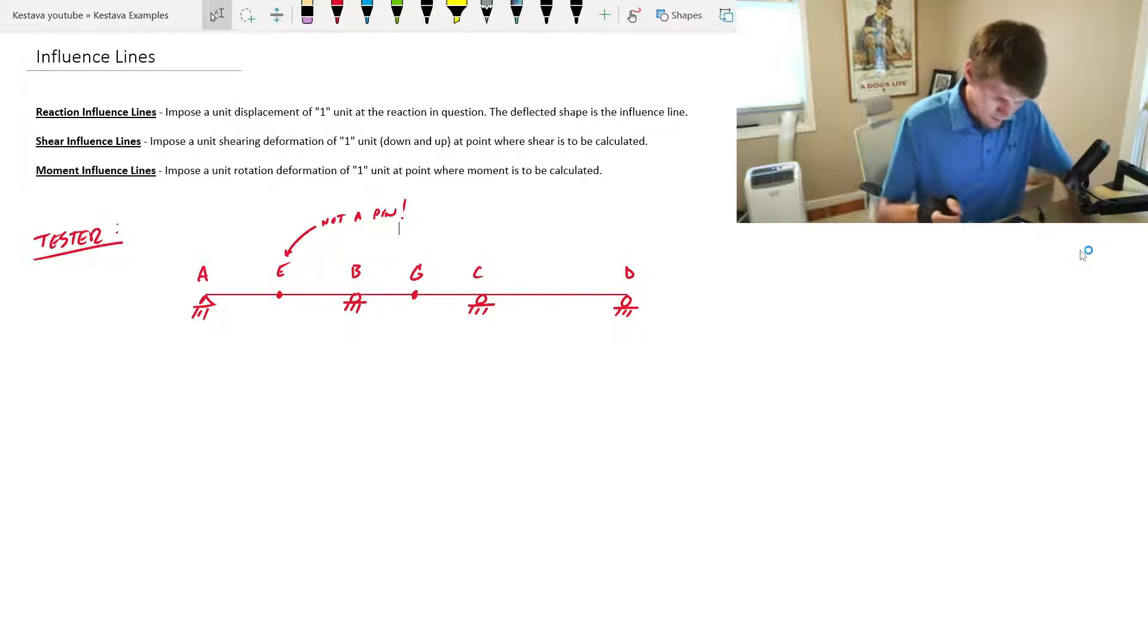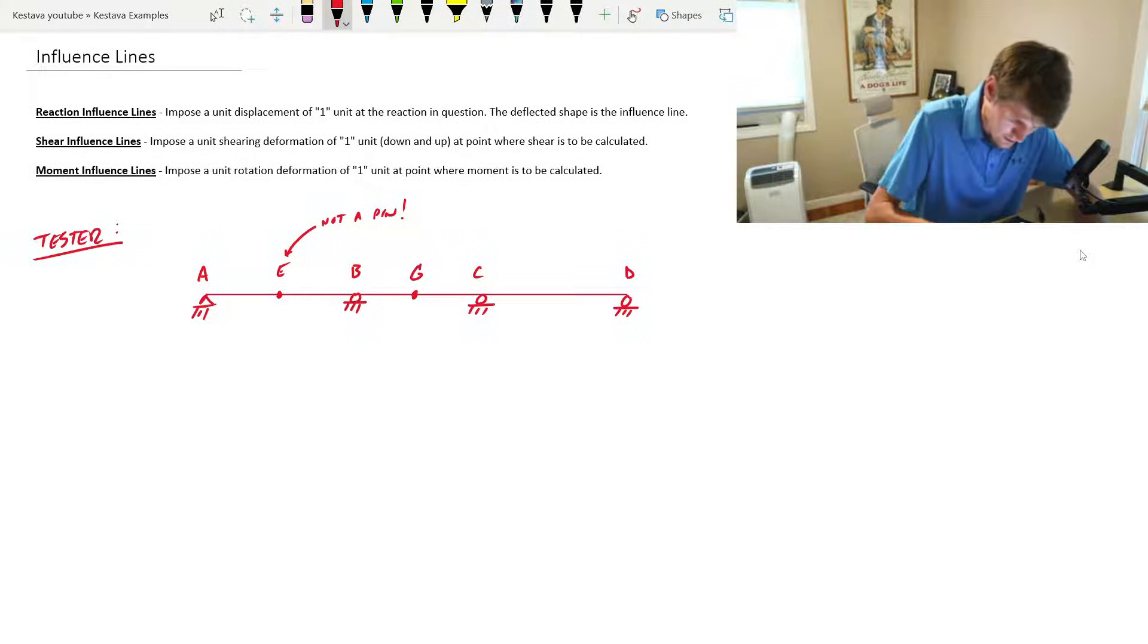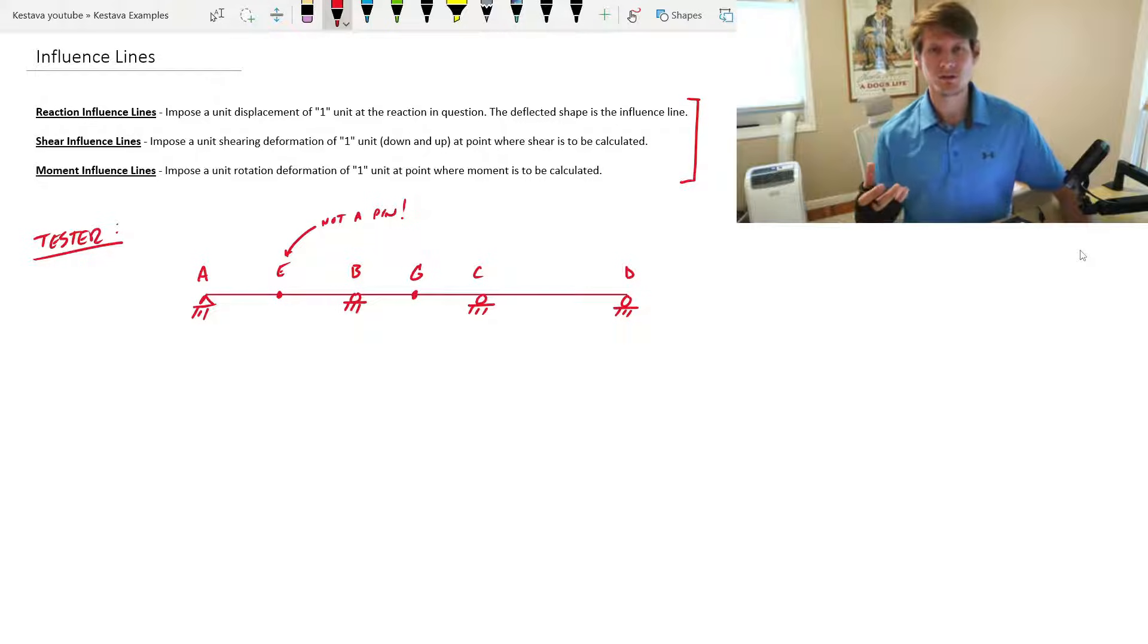But what are our rules? Just like anything else we solve for in engineering, most of the time you have reactions, you have shear values, you have moments that you're looking for. And just like influence lines, you have those categories as well. And for each category, you have a different rule that you're using in order to create your influence line.